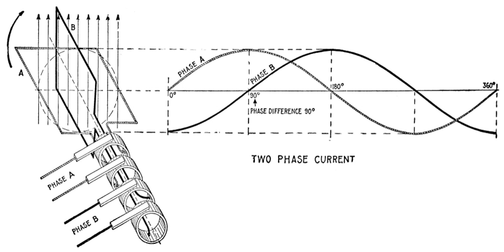Two-phase electrical power was an early 20th century polyphase alternating current electric power distribution system. Two circuits were used, with voltage phases differing by one quarter of a cycle, 90 degrees.